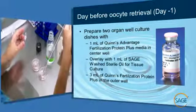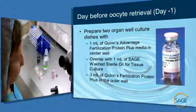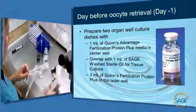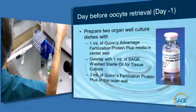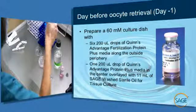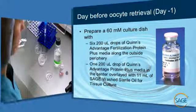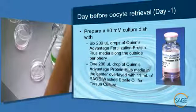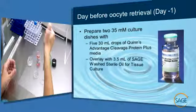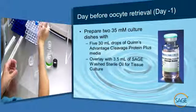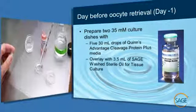You will need to prepare two organ well culture dishes with 1 ml of Quinn's Advantage Fertilization Plus Media in the center well overlaid with 1 ml of culture oil, and 3 ml of Quinn's Advantage Fertilization Plus Media in the outer well. This dish will be used to retrieve oocytes and wash them before they are placed in their maturation dish. You will also need to prepare a 60 mm culture dish with six 200 µl droplets of Quinn's Advantage Fertilization Plus Media along the outside periphery and one 200 µl droplet in the center, overlaid with 11 ml of culture oil. For post-ICSI dishes, two 35 mm culture dishes with five 30-microliter droplets of Quinn's Advantage Cleavage Plus Media should be made, then overlaid with 3.5 ml of culture oil.